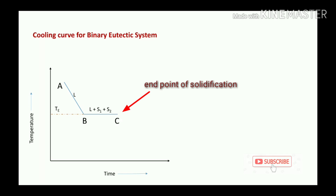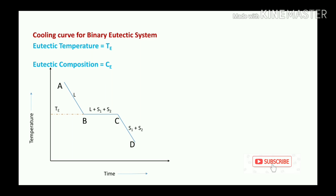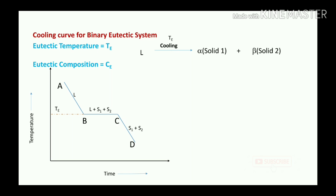From region A to B there is 100% liquid phase. From B to C, the liquid starts converting into two different solids — liquid plus solid one plus solid two. Point C represents the end point of solidification. After C, down to room temperature, two solids are formed. The reaction is: liquid phase, by cooling at eutectic temperature, converts into alpha (solid one) plus beta (solid two).